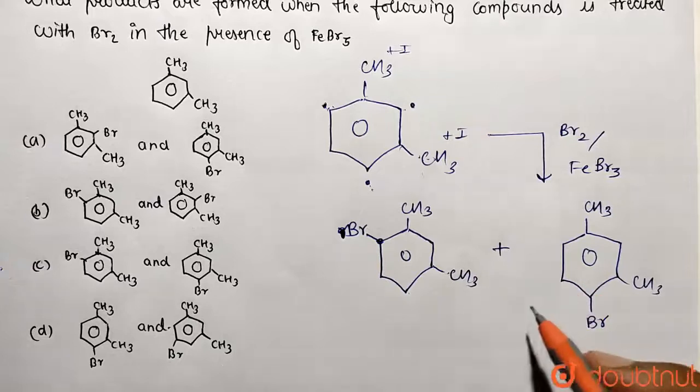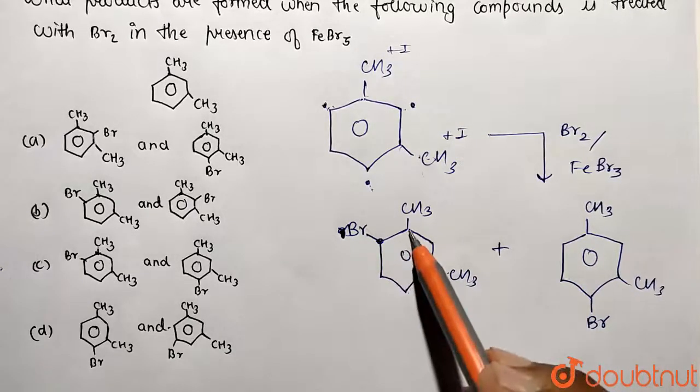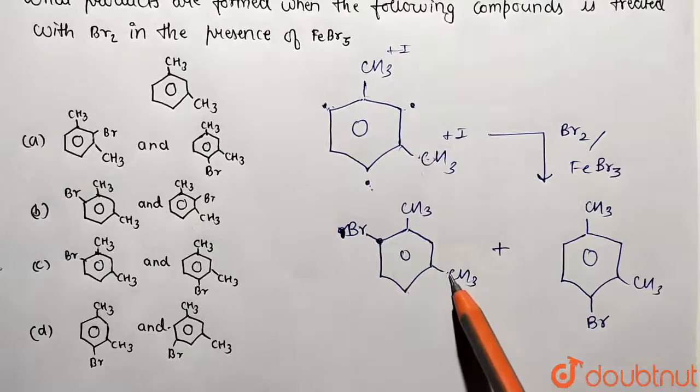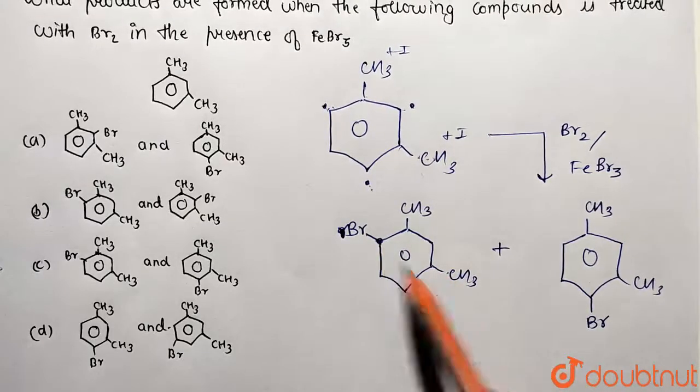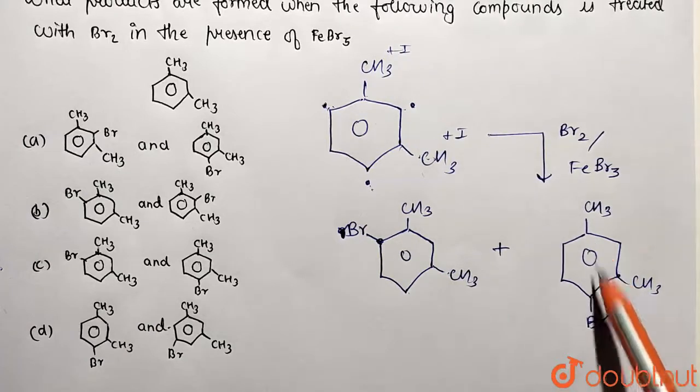These are going to be the identical positions because both are same. For this, this is going to be ortho position, and with respect to this one, this is para position. Similarly, over here for this carbon it's going to be ortho position, and this carbon it's going to be the para position.